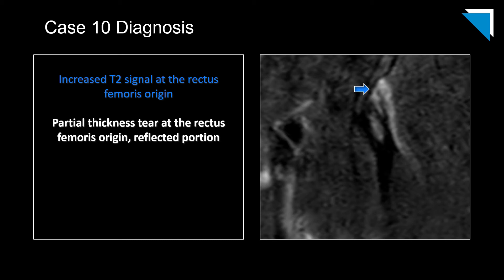This is indicative of a partial-thickness tear of the reflected portion of the tendon. When we talk about avulsion injuries of the rectus femoris tendon at the anterior inferior iliac spine, we are talking about the direct portion of the tendon. There is also a reflected portion of the tendon, which originates more superiorly along the lateral aspect of the acetabulum.